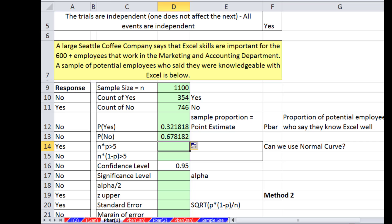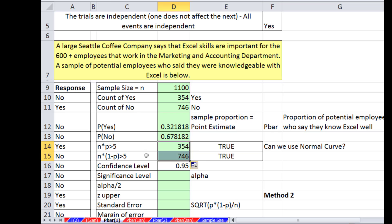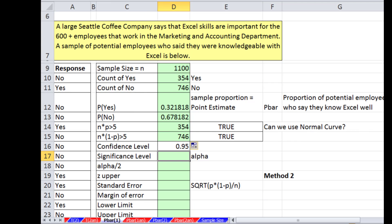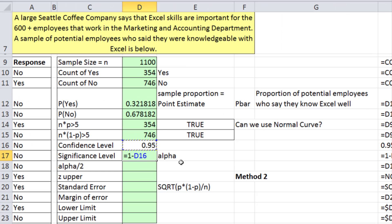Let's test to see if we can use the normal distribution. Equals sample size times our p, and I'm going to lock this with F4. This one down here is 1 minus p. In both cases we're greater than 5, so we can use the standard normal curve. Let's calculate a confidence interval of 95%. We'll say equals 1 minus confidence level to give us our alpha. Alpha divided by 2, just as we've done so many times in this chapter. That's the risk on the upper end.